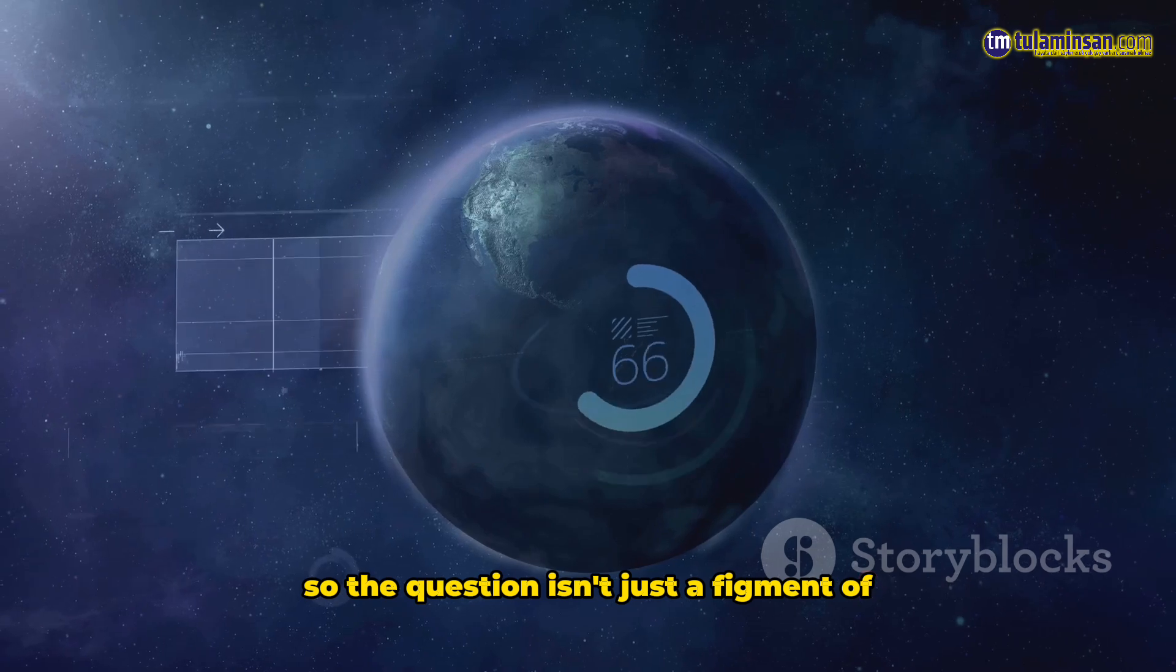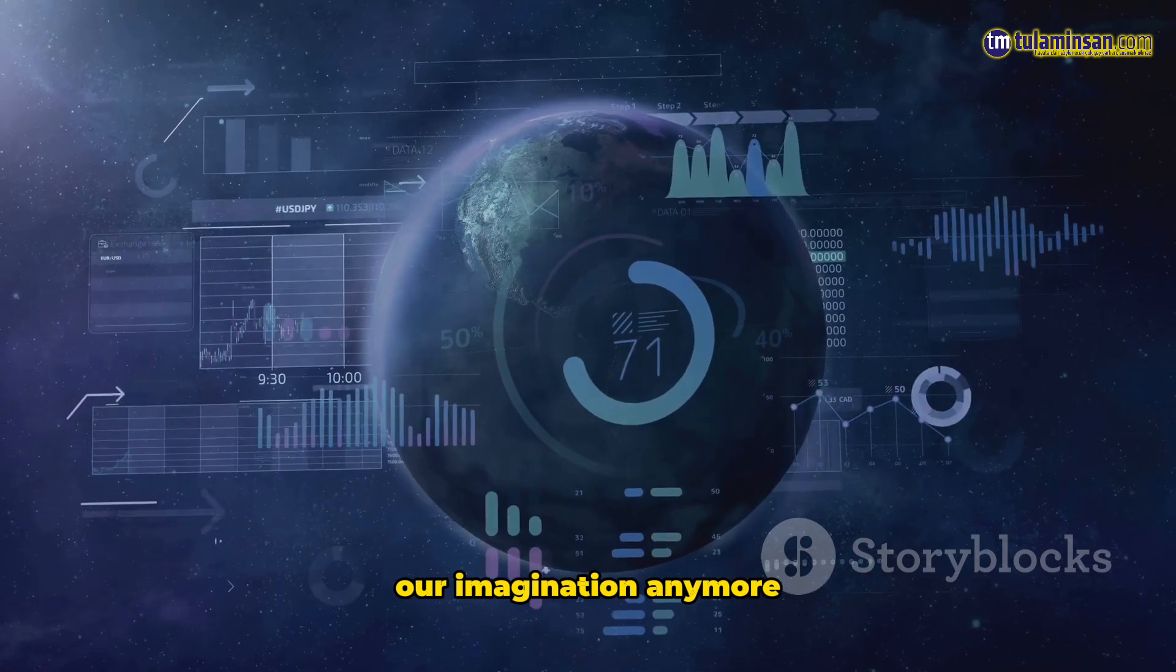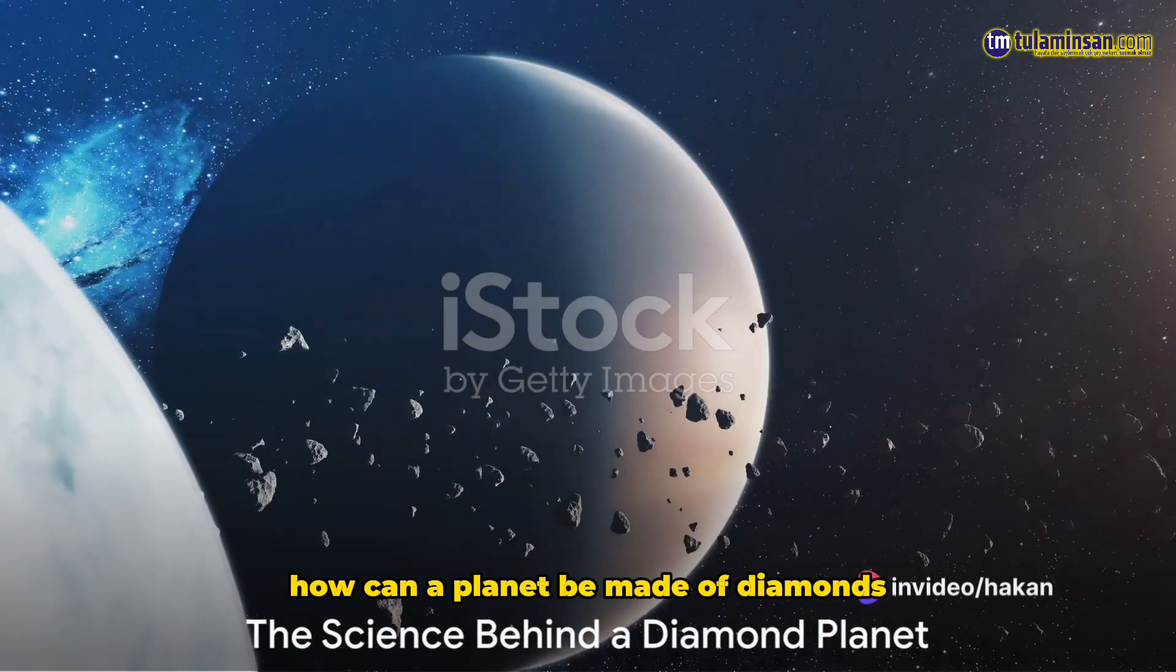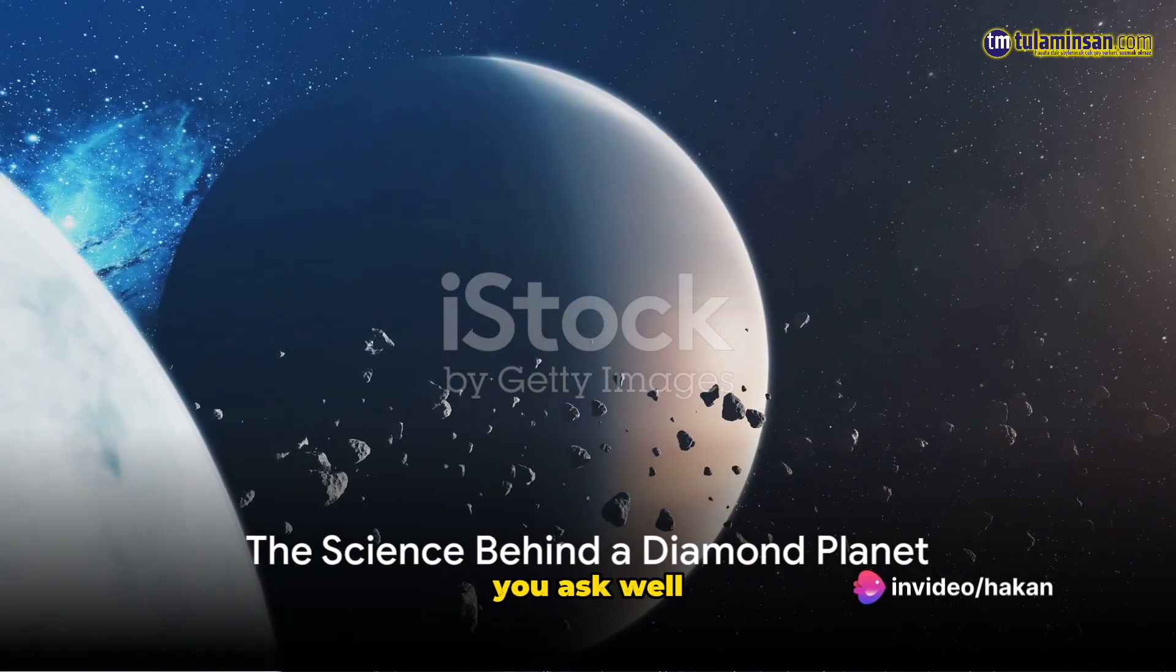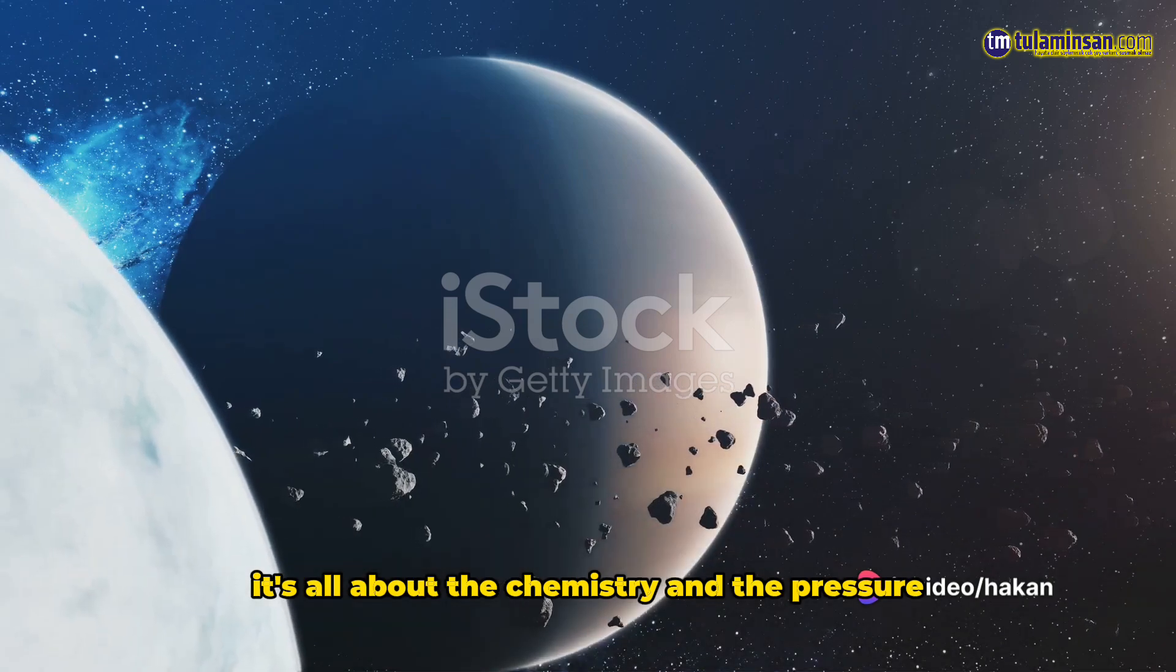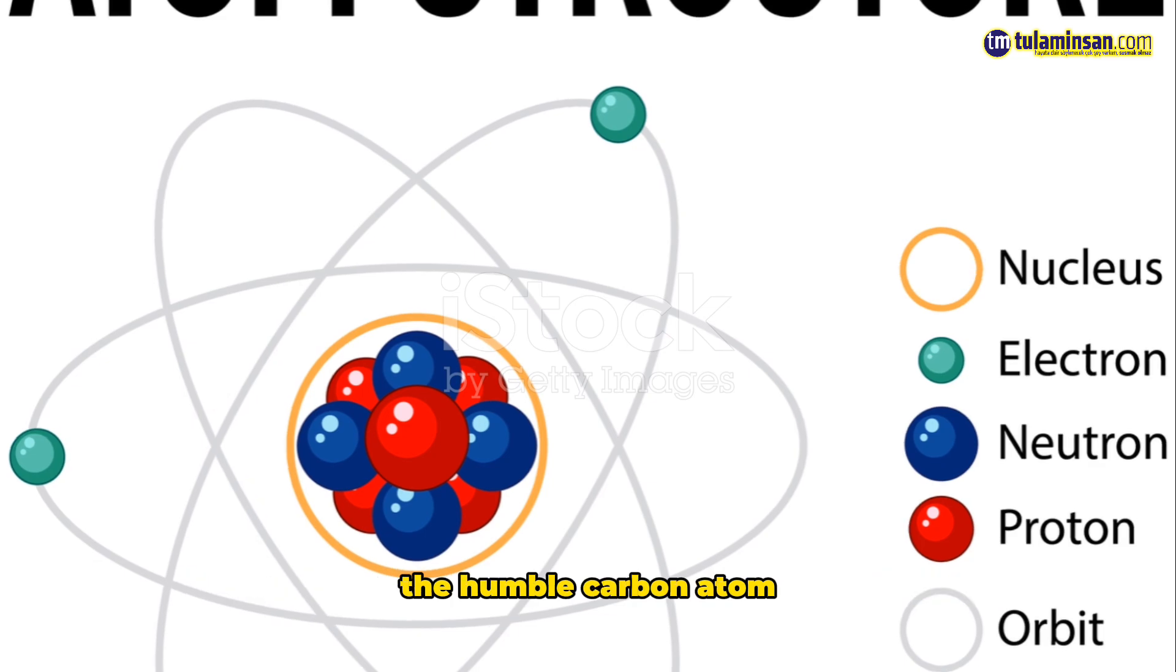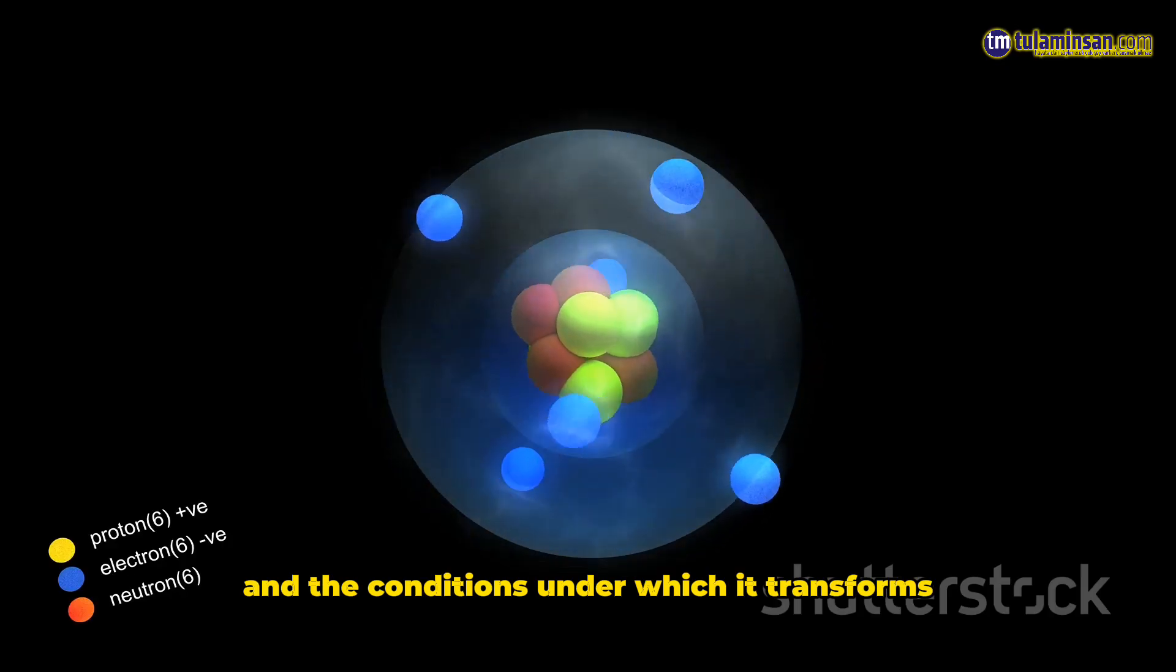So, the question isn't just a figment of our imagination anymore. It's a real scientific mystery that researchers are trying to unravel. How can a planet be made of diamonds, you ask? Well, it's all about the chemistry and the pressure. The key to understanding this dazzling concept lies in the humble carbon atom and the conditions under which it transforms.